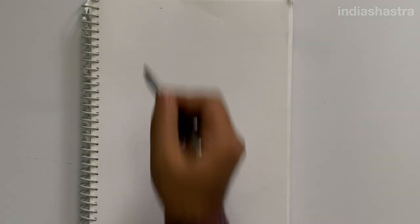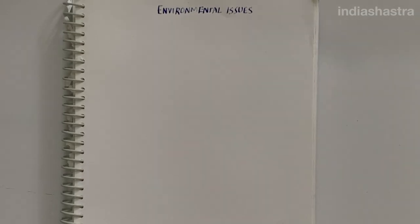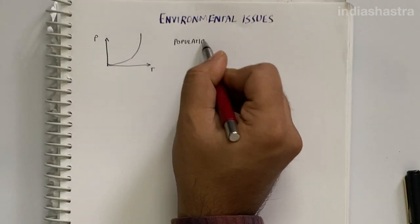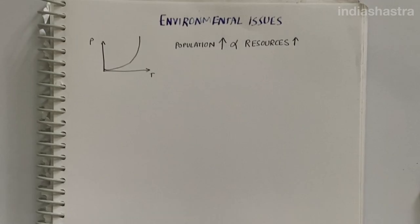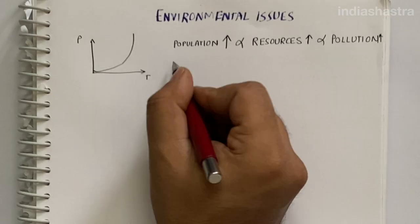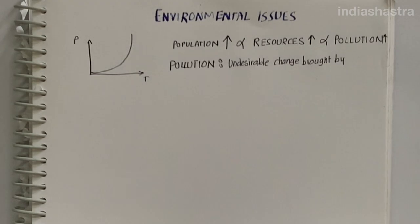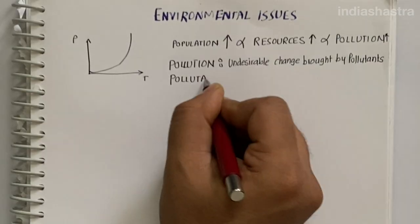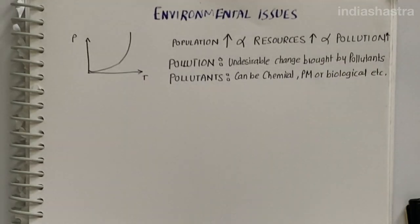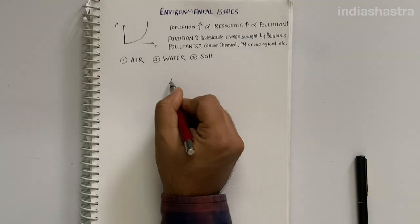Let's begin with the last and most important chapter: Environmental Issues. Human population is increasing day by day. With that, requirement for resources is increasing too. We're putting pressure on natural resources and as a result polluting air, water and soil. Pollution is the undesirable change brought by chemical, particulate matter or biological materials to air, water or soil. Agents that bring such undesirable change are called pollutants. In this chapter we're learning three major kinds of pollution: air, water and soil.